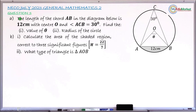Question A says the length of chord EB in the diagram below is less than 12 centimeters. The center is O and angle ACB is 30 degrees, as marked in the diagram.